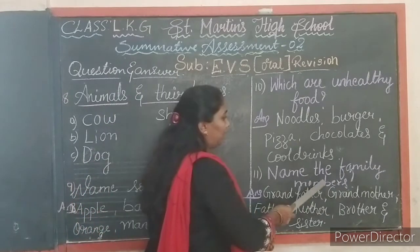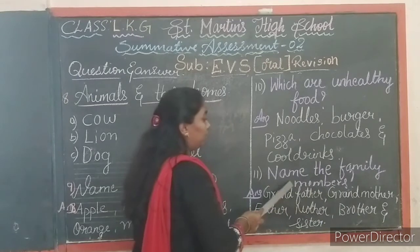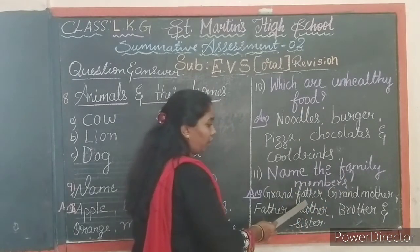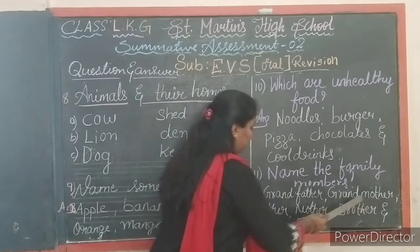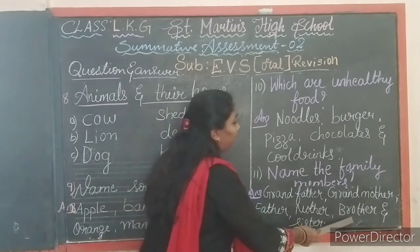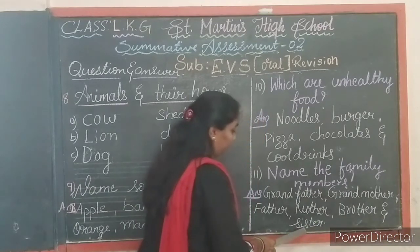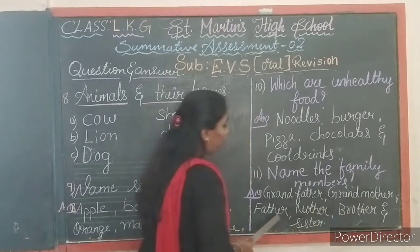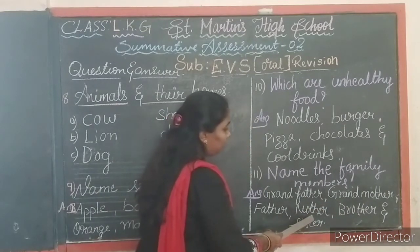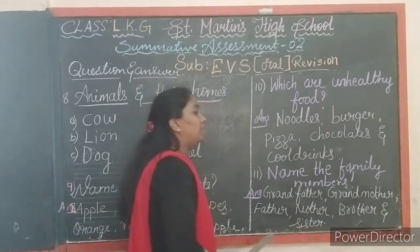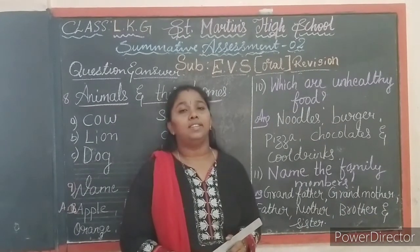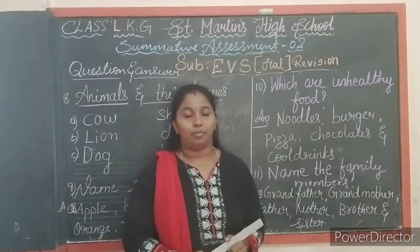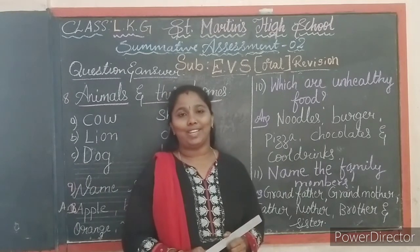Okay children. Next question: name the family members. Answer — grandfather, grandmother, father, mother, brother and sister. Practice all these question answers for your SA2 oral exam. Okay children, all the best for your exam. Thank you.